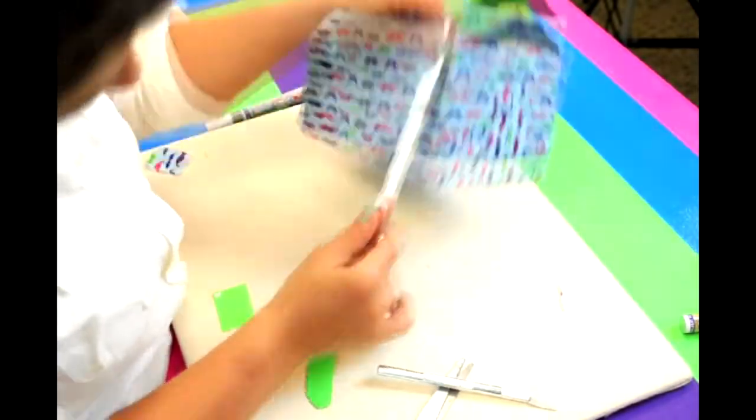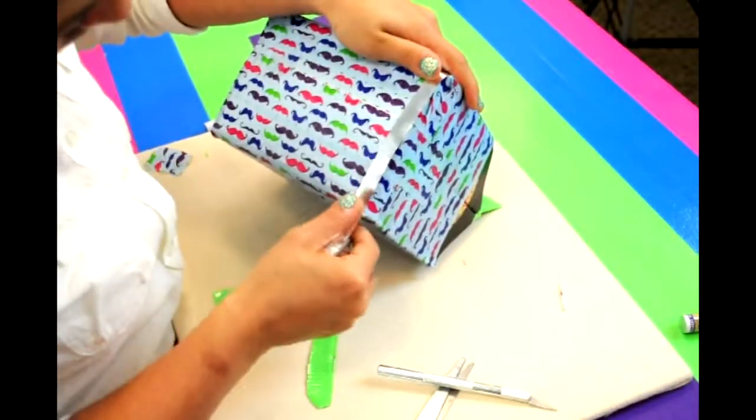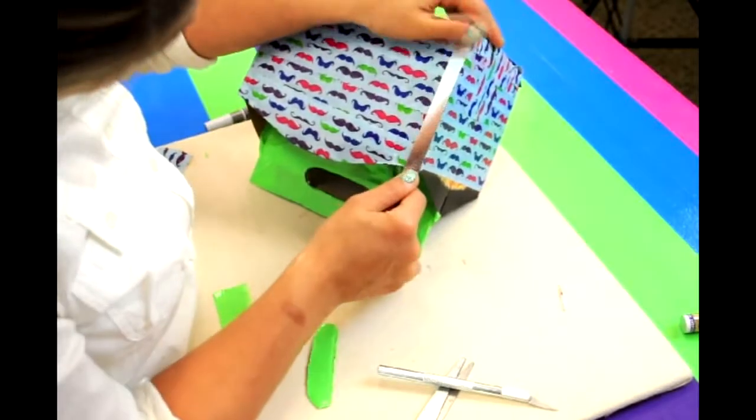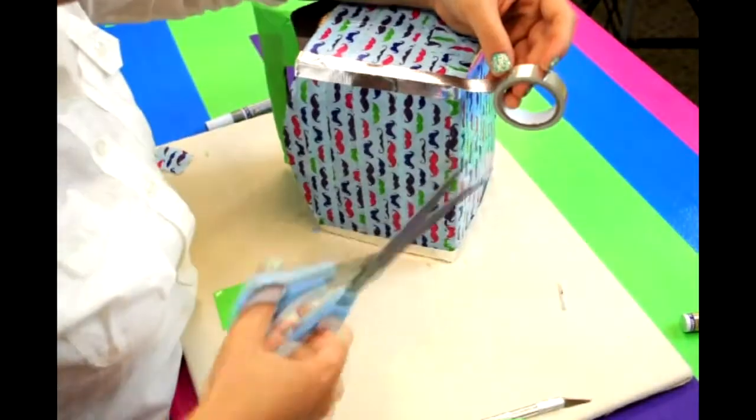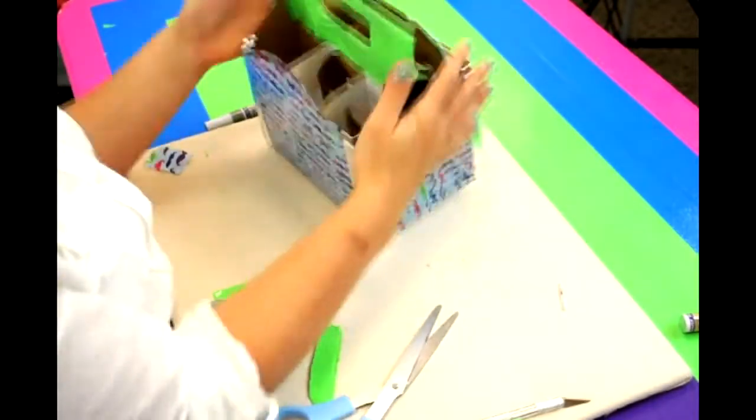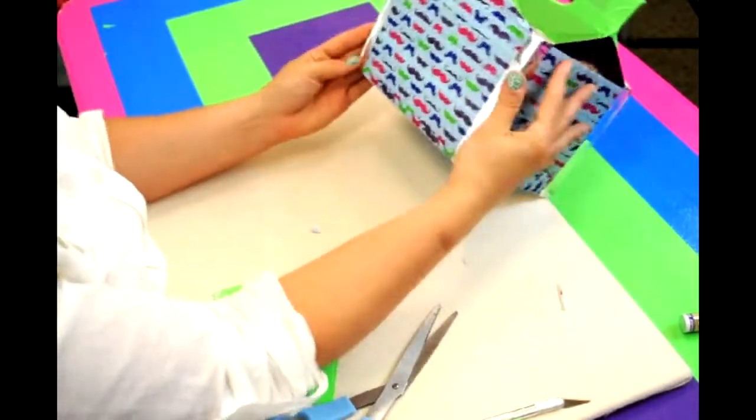Perfect. Then take our silver mini tape and we're going to simply accent the corners of the toolbox. You can do as much accent taping as you'd like.